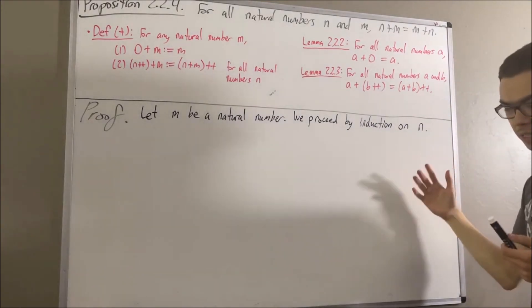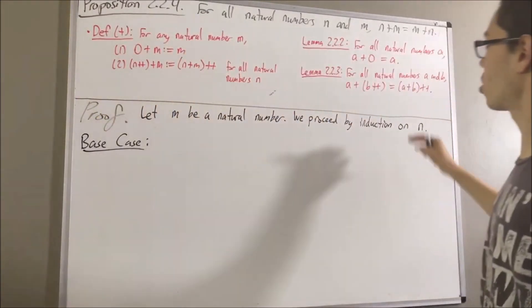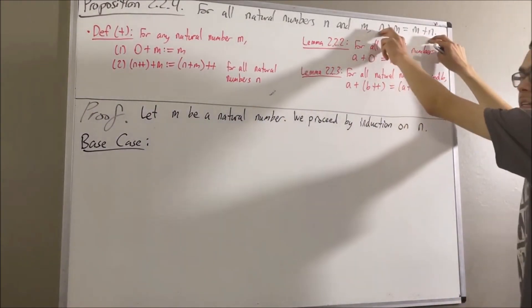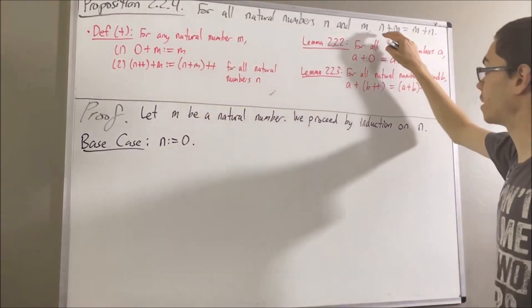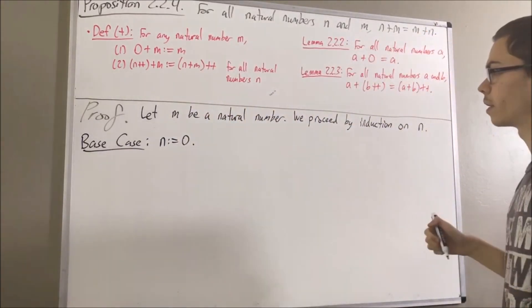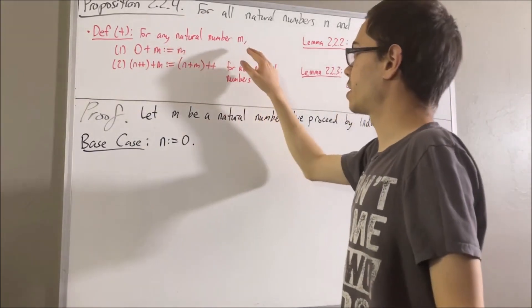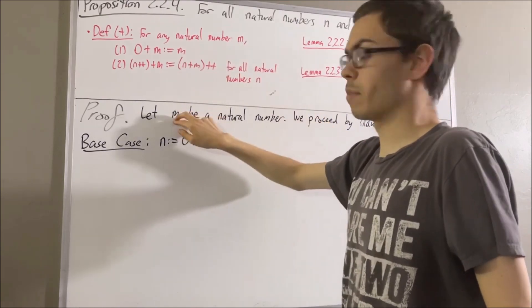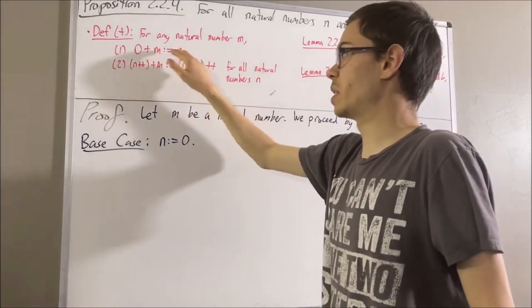So let's start with the base case. In the base case, we're trying to prove that this is true in the case where n is equal to 0, which means we're trying to prove that 0 plus m is equal to m plus 0. Now to start, by definition of addition, let's take our natural number m here to be m.